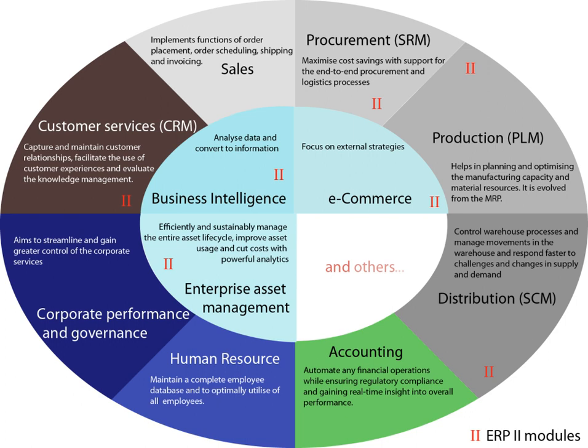Order processing includes: order to cash, order entry, credit checking, pricing, sales analysis and reporting, sales commissioning. Supply chain management includes: supply chain planning, supplier scheduling, product configurator, order to cash, purchasing, inventory, claim processing, warehousing, receiving, putaway, and picking and packing.